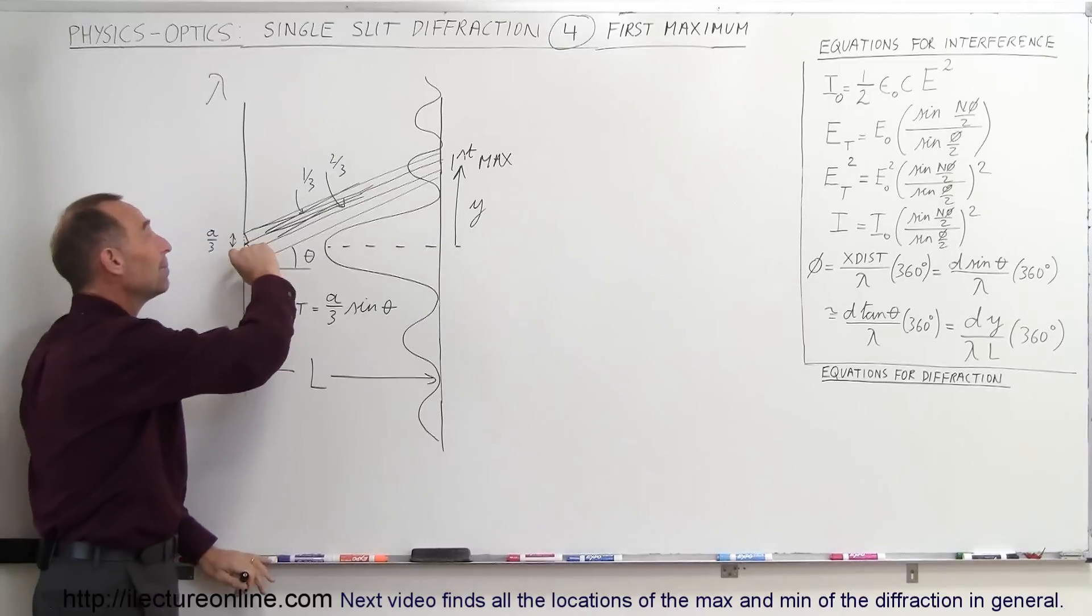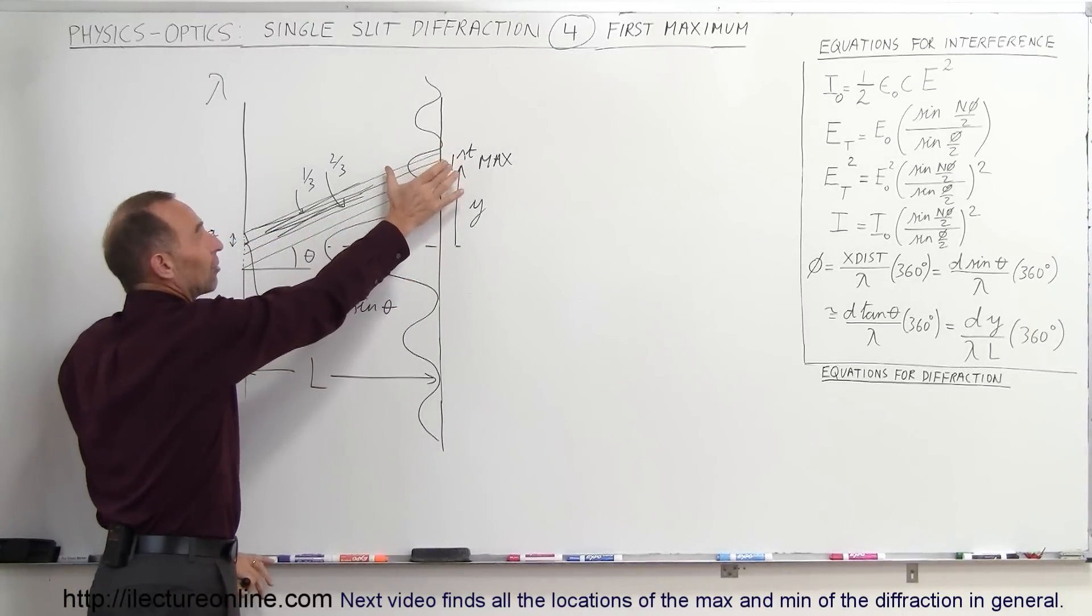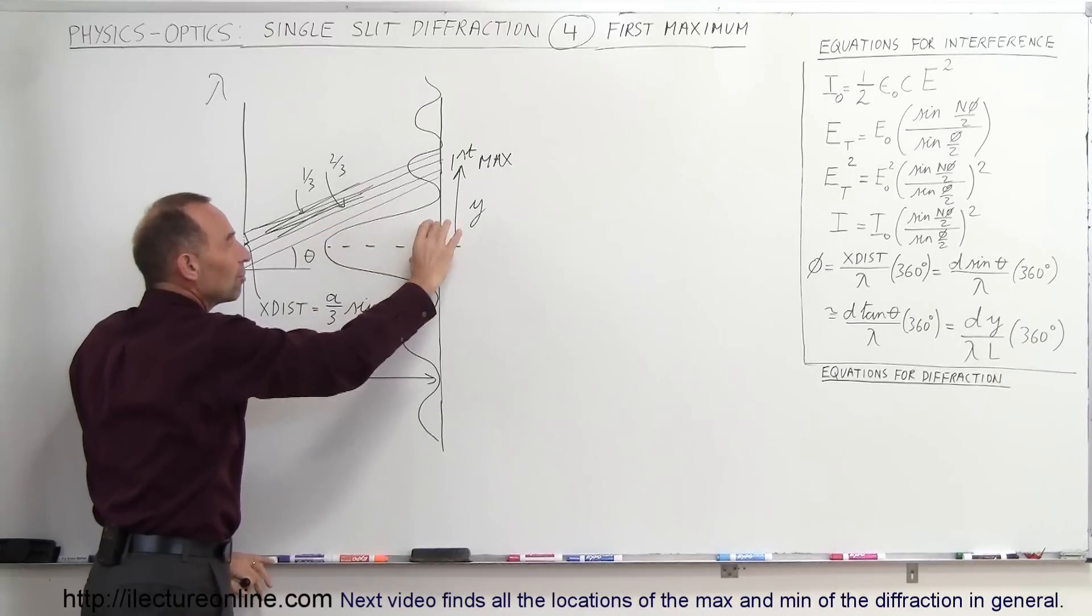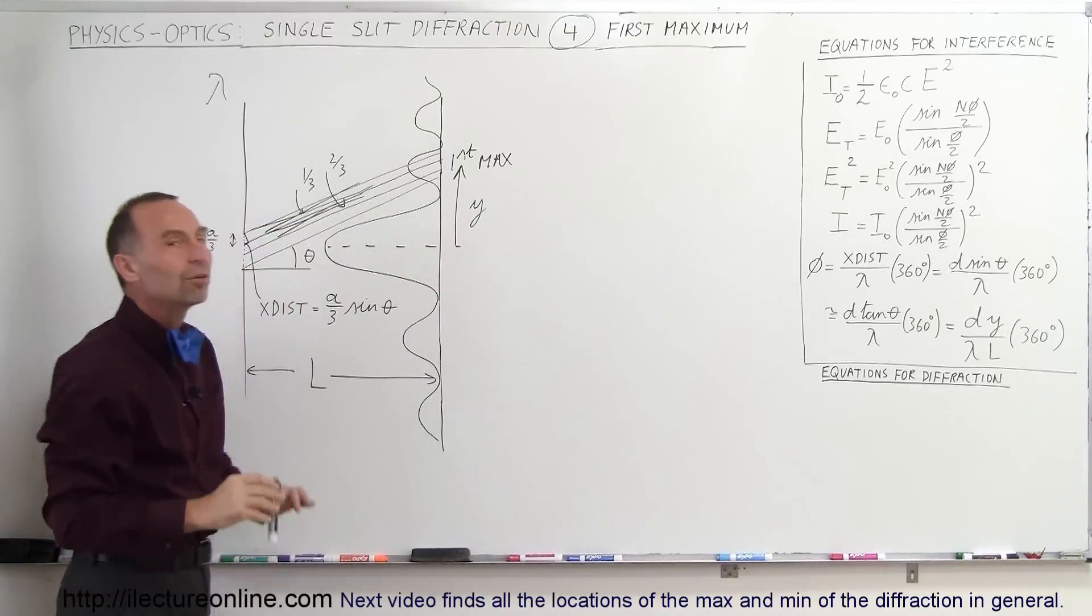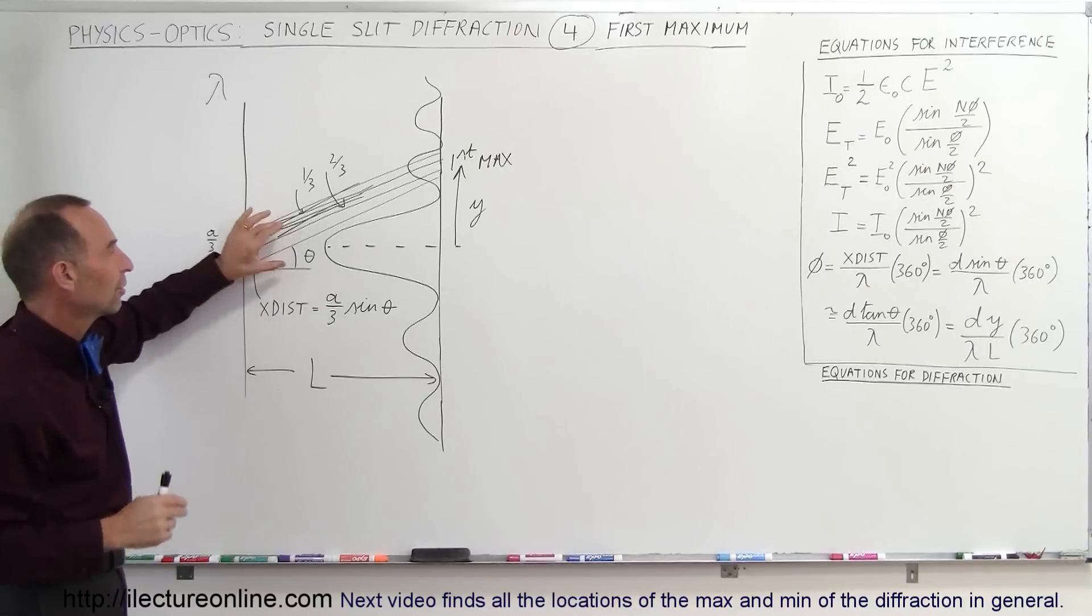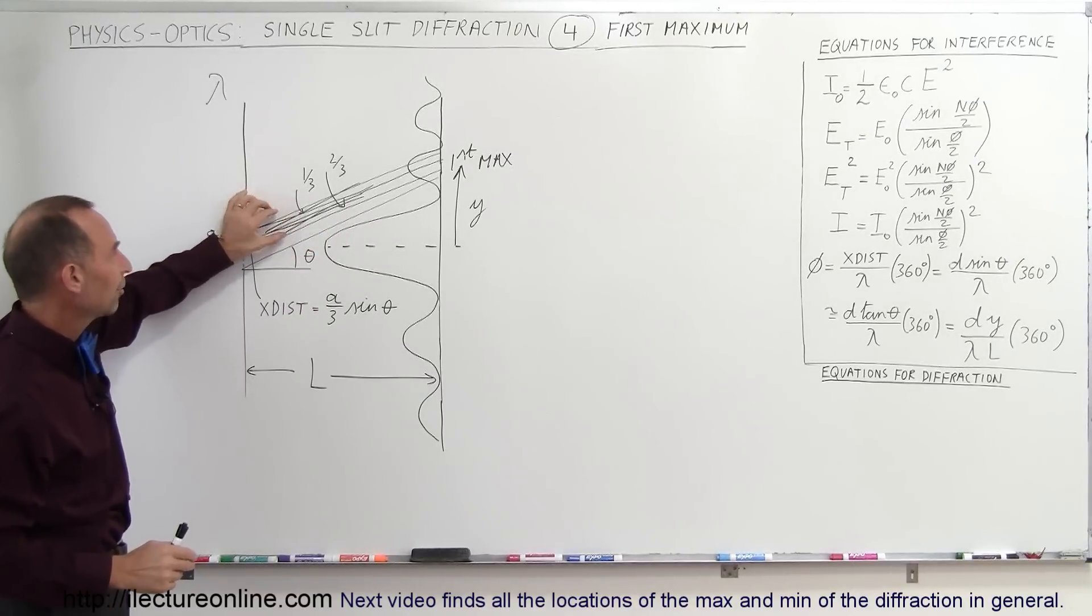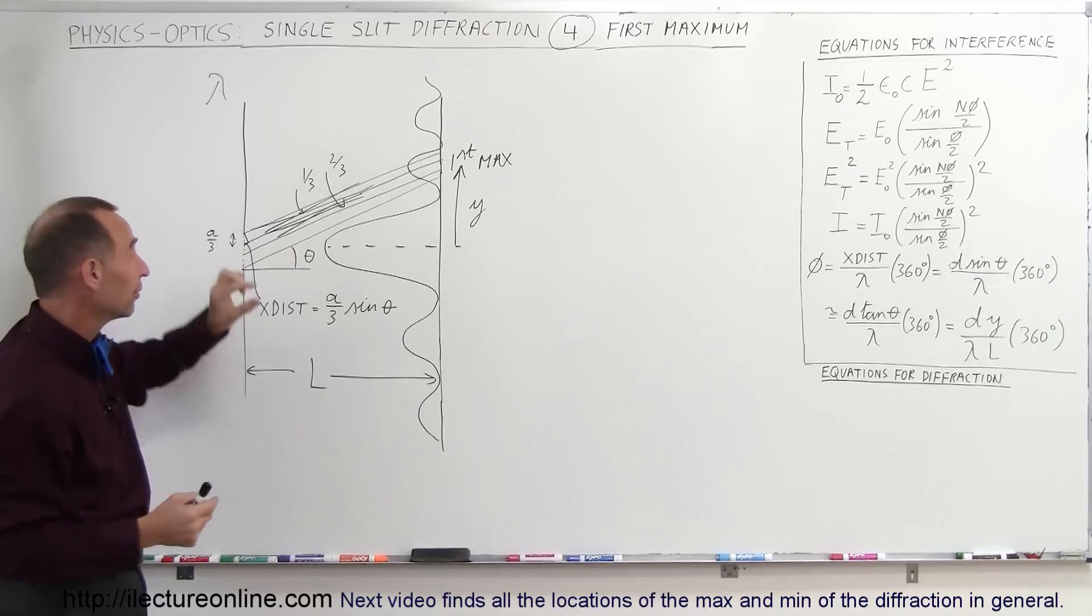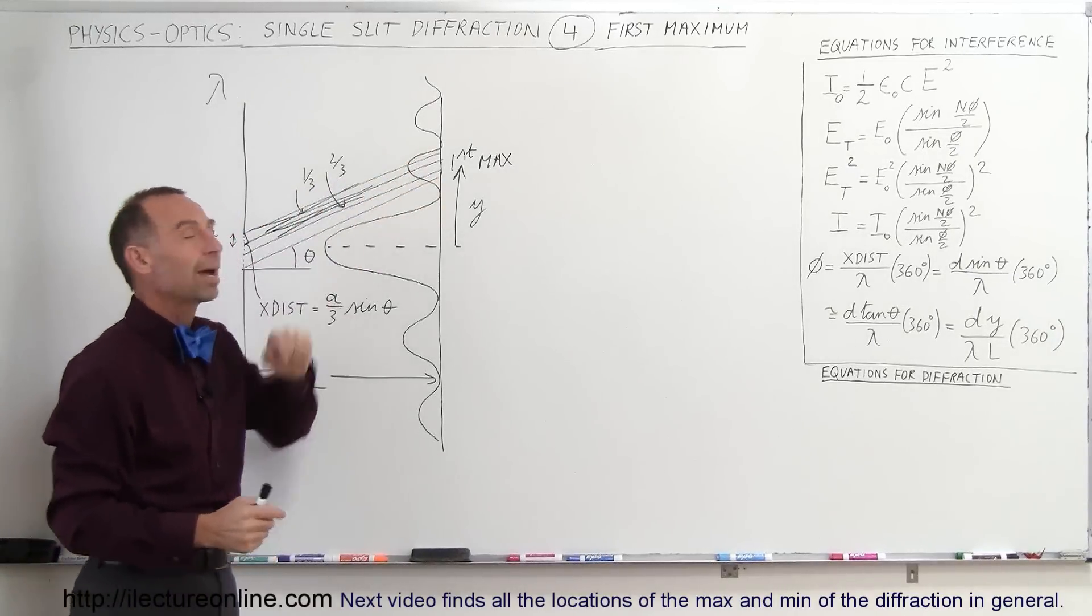Since it's only one-third of the beam that gets through instead of the entire beam, you can see that the first maximum has a lot lower intensity than the central maximum, because here the entire beam will illuminate the screen over there and there will be no destructive interference at all. But here you can see that two-thirds of the beam has been eliminated through destructive interference in such a way that only one-third of the beam makes it through to make this first maximum.